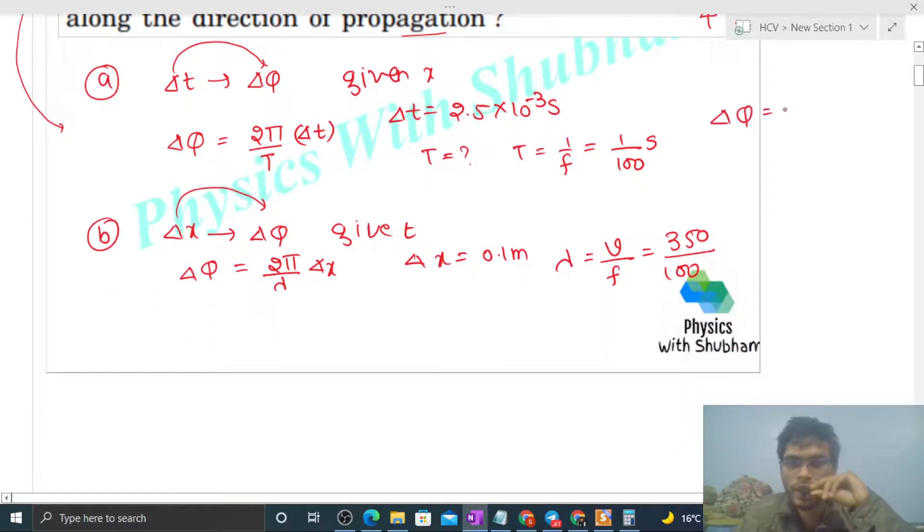2π divided by time period. Time period is 1 upon 100, so when you divide by 1 upon 100, the 100 will come up and multiply. Into Δt, our Δt will be 2.5 × 10^-3.